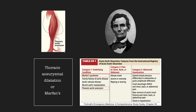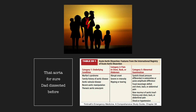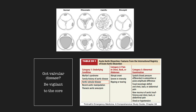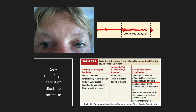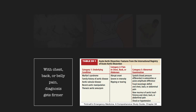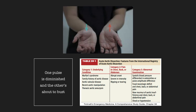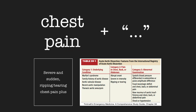Thoracic aneurysmal dilatation of Marfan's, recent aortic manipulation — scan that aorta for sure. Dad dissected before, got valvular disease — be vigilant to the core. New neurologic deficit or diastolic murmur, with chest, back, or belly pain — diagnosis gets firmer. One pulse is diminished and the other's about to bust. Severe and sudden ripping, tearing, chest pain plus.